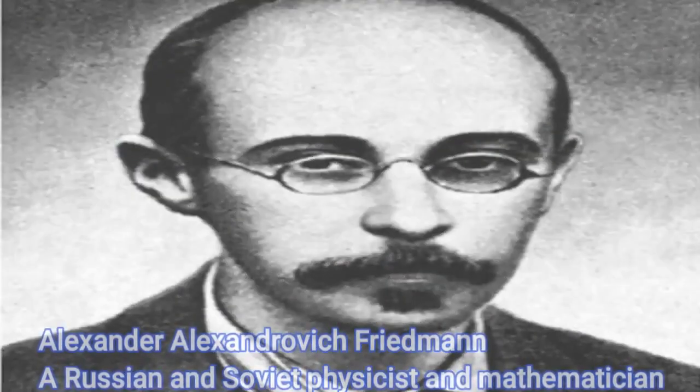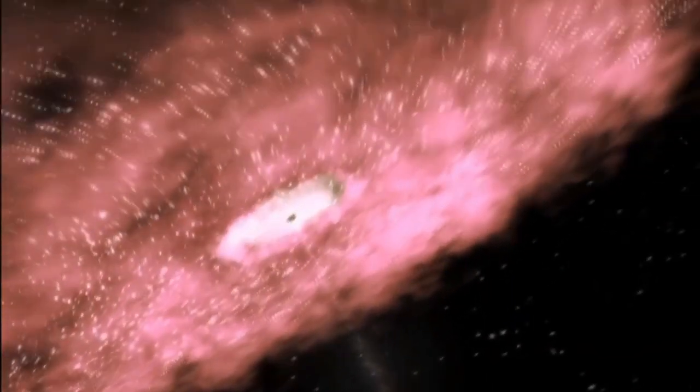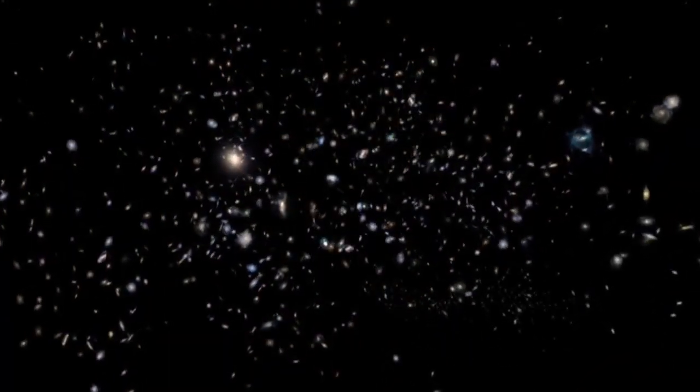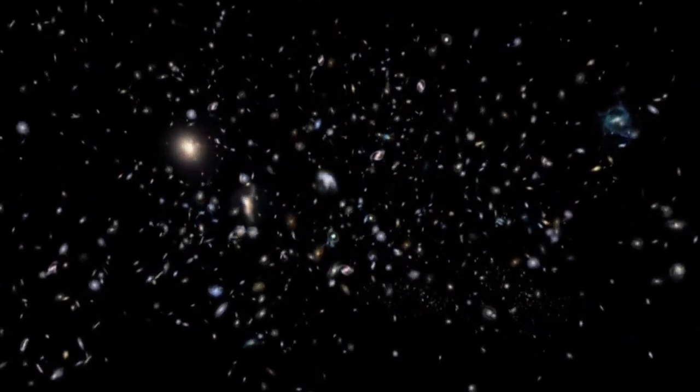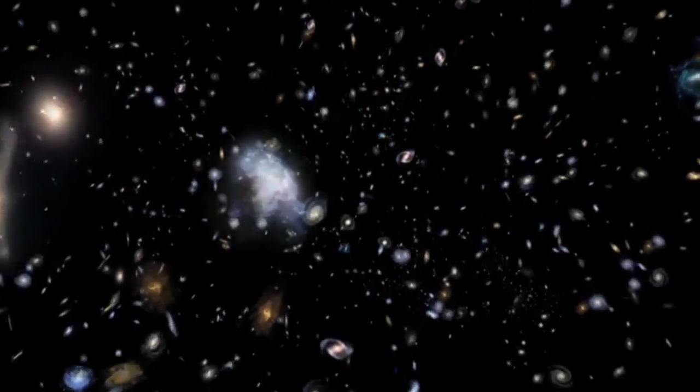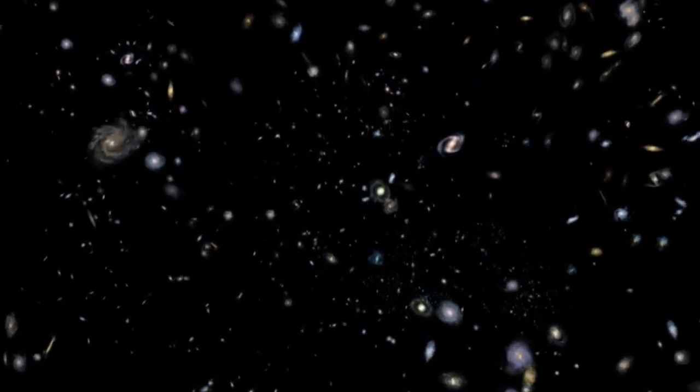Alexander Alexandrovich Friedmann, a Russian and Soviet physicist and mathematician, is best known for his pioneering theory that the universe was expanding, governed by a set of equations he developed now known as the Friedmann equations. In 1922, Friedmann showed that the field equations predict a dynamic universe which can either expand forever or go through cycles of alternating expansion and contraction. Einstein came to agree with this result and abandoned his cosmological term.